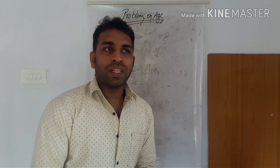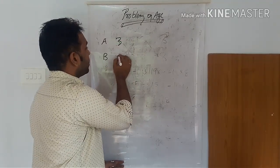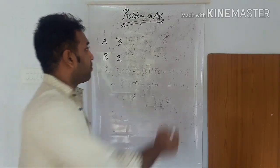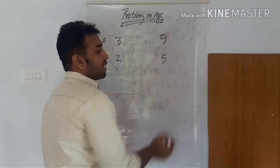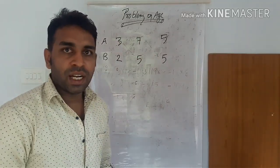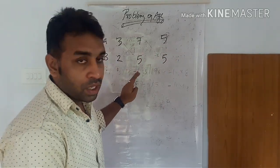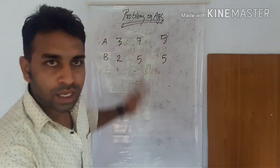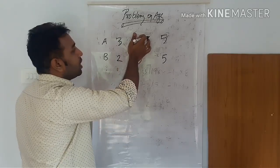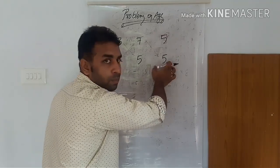The ratio of ages A and B is 3 is to 2. After 5 years, the ratio of ages becomes 7 is to 5. You can see the range — between these values you can see the equation set up here.